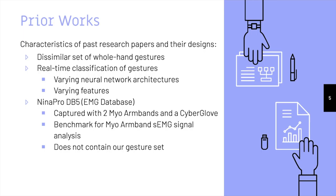Previous works in this field commonly employ a common gesture set that utilizes the whole hand to produce dissimilar sEMG signals with a large amplitude. Examples include open hand, wrist flexion, clenched hand, and wrist extension. Decently studied finger movements include a large swoop of the fingers to produce similarly large sEMG signals. These gestures can be reliably classified at a real-time rate using various neural network architectures and features.